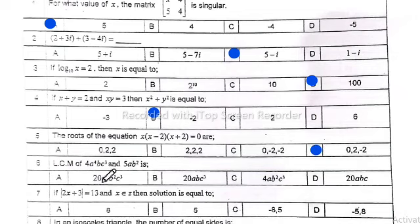Number 6: The sum of 4a⁴bc³ and 5ab² is 20a⁴b²c³. Option A is correct.